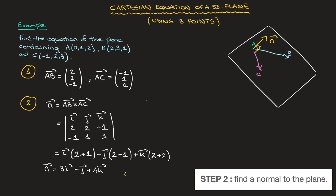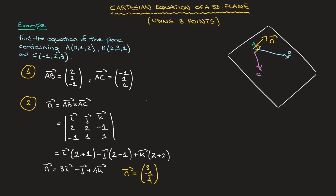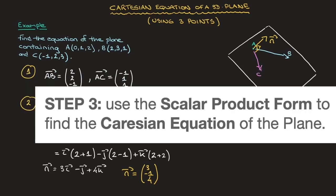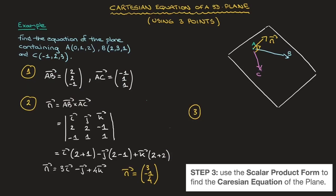We can write that normal in its component form: N = (3, negative 1, 4). We now have a normal to the plane, so we move on to the third and final step, step 3, in which we use the scalar product form formula to find a Cartesian equation of the plane. The scalar product form formula states that the scalar product of N and R is equal to the scalar product of N and A.